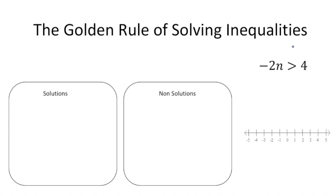Let me show you what the golden rule is about. First, let me give you an example of an inequality problem where the golden rule is going to pop up. So here we have negative 2n is greater than 4. Before we actually solve it and graph it, let's come up with solutions and non-solutions.